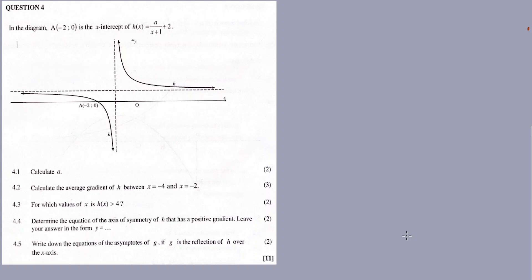Thanks for tuning in. In the description box there's a link for other recordings for the question paper. Now, in the diagram, point A is at negative one, negative two, and zero is the x-intercept of h of x.